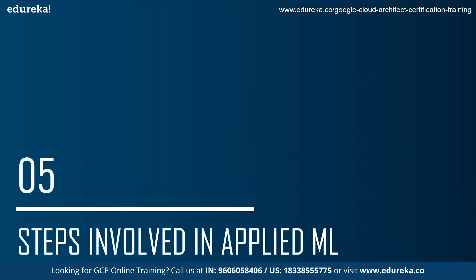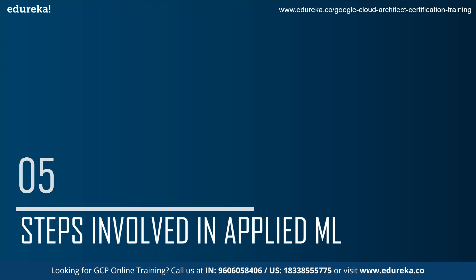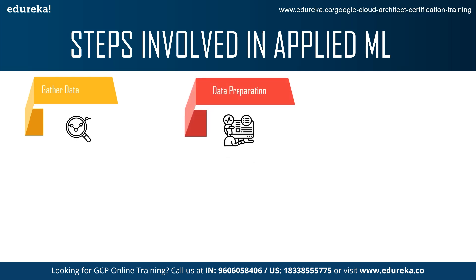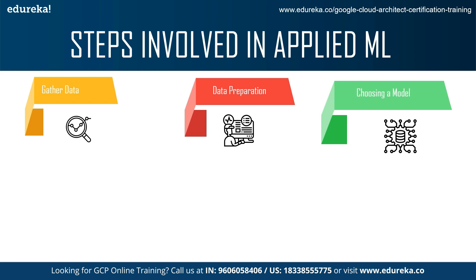Then we talk about the steps involved in applied machine learning. Suppose you want to train your own machine learning model — the first thing you do is gather the data you need to feed your model. After gathering the data you structure it so that it's easier for your model to understand. Then one of the most important steps is choosing a model for your deployment — a model that you can train.